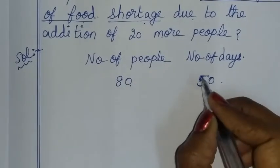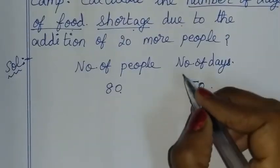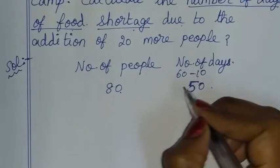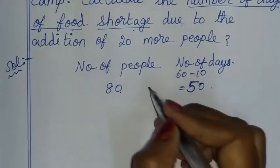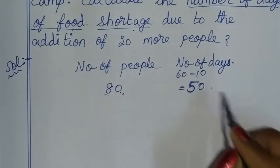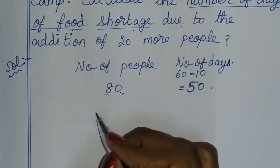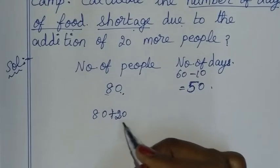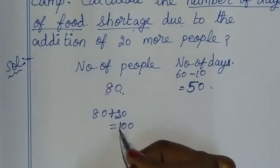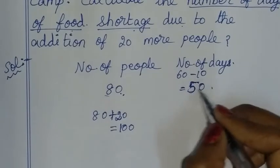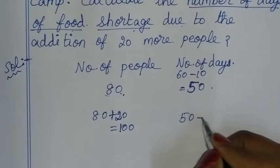If we use 80 people for 50 days to get food, now the number of people has increased. So the remaining food is for 80 people for 50 days, and now we need to find how many days it will last for 100 people. So it is 50 minus x.